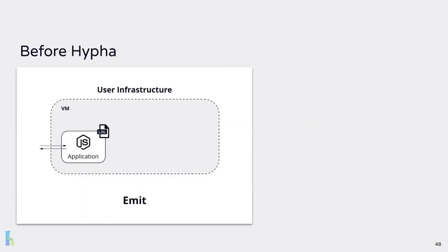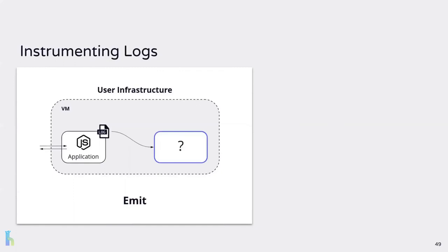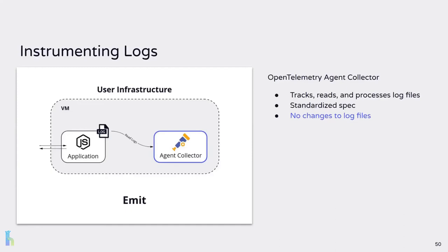Here we have a Node.js application running in a virtual machine. The application already uses a logging library such as Winston, which outputs application logs to local log files in the VM. Since our application already generates logs, we next need a way to collect them. We could change the logging library to send the logs somewhere else, such as directly to an agent. However, this would require considerable changes to the logging implementation, violating our design goal. In order to instrument logs while leaving the existing logging system and log files intact, we need a way to read from the log files already in use. This is where the OpenTelemetry agent collector, and specifically its file log receiver, comes into play. It tracks, reads, and processes application log files to a standardized spec.